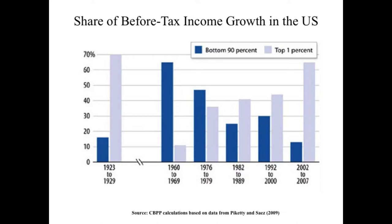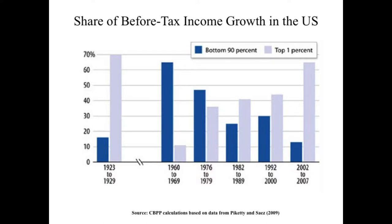This graph shows the pattern of income growth in the United States — specifically the share of pre-tax income growth. Back in 1923, there were huge income gaps: the top 1% got almost 70% of income growth, while the bottom 90% got only 15%. But in the 1960s, this inequality rapidly decreased — the top 1% got only about 10% of income growth, while the bottom 90% got almost 65%. However, this trend changed again, and by 2000, the top 1% is getting almost 65% of pre-tax income growth, while the bottom 90% are getting only 15%.